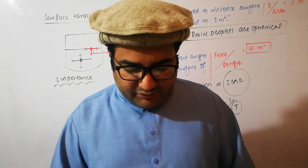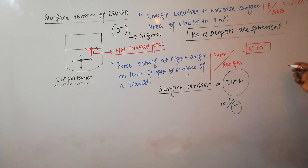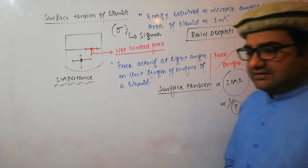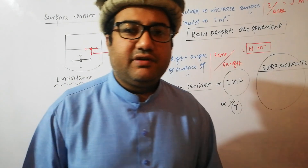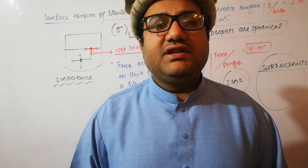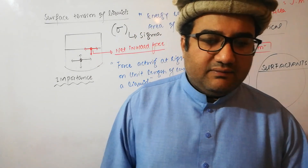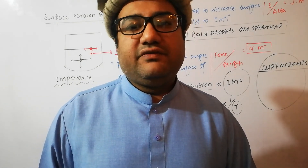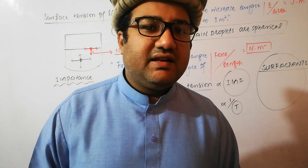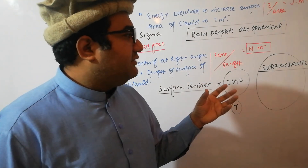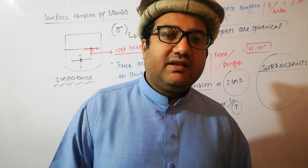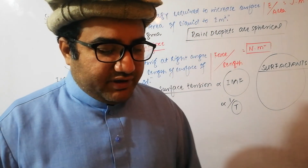Now let's come to the next concept: surfactants. Surfactants are substances that decrease the surface tension between two liquids. If you are a biology student, you will have studied bile — bile is also a surfactant; it is an emulsifier that makes an emulsion of the fat components of your food in water so that lipases can easily act on it. One of the best examples of surfactants that you use at home are detergents — they decrease the surface tension of water and help in the cleansing action.